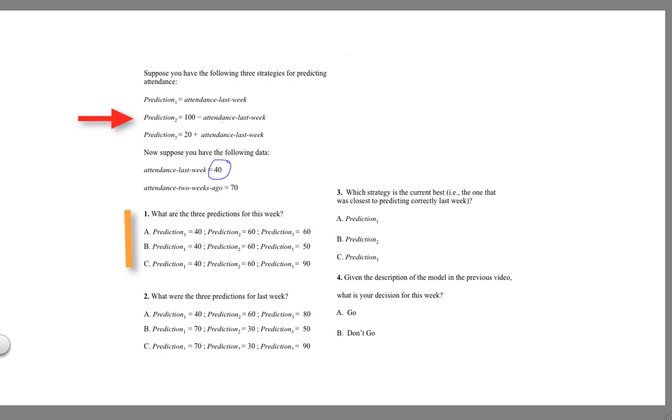The second one is 100 minus attendance last week, 60, 100 minus 40. And then 20 plus attendance last week, 20 plus 40 is 60. So that shows us that answer A is the correct one.